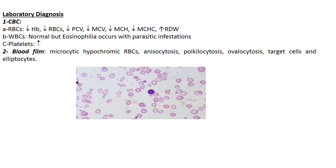For the lab findings of any type of anemia, we must comment on a set of investigations including the CBC, with comment on the three cellular elements, blood film, and reticulocyte count. In iron deficiency anemia, we will find microcytic hypochromic anemia in the CBC — meaning RBCs, hemoglobin, and hematocrit are low, and also MCV, MCH, and MCHC are low. The RDW (red cell distribution width) is high, meaning these patients have anisocytosis. There may be eosinophilia in cases of parasitic infestation, and for platelets, there may be thrombocytosis.